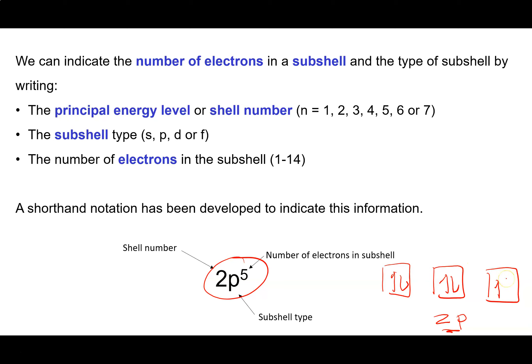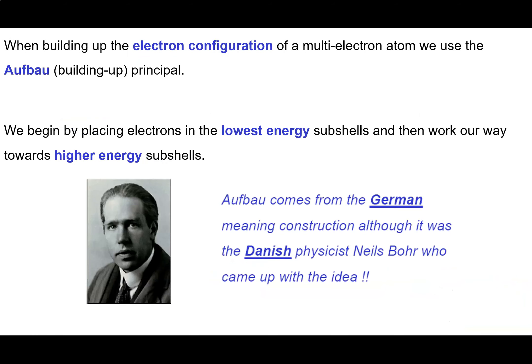We don't just want to write for one subshell — we want to write for all subshells in an atom. When we write out how many electrons are in each subshell of an atom, we generate what's called an electron configuration. The principle we use when building up an electron configuration for a multi-electron atom is called the Aufbau principle — German for 'building up.' We start by placing electrons in the lowest energy orbitals and work our way up.